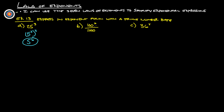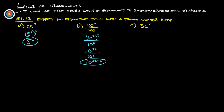For B, that is 100 to the T. 100 is the same thing as 10 squared, all to the T. And 1000 is 10 to the third. So this is 10 to the 2T over 10 to the third. Remember anything on the bottom we subtract, so that's 10 to the 2T minus 3.